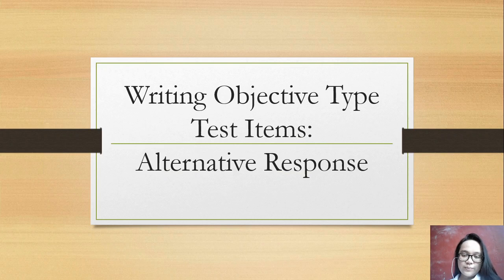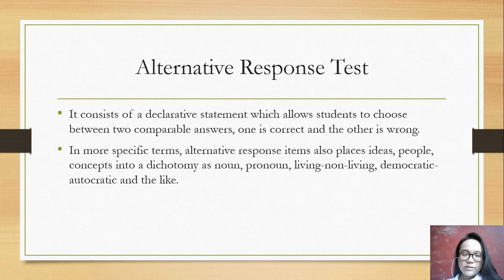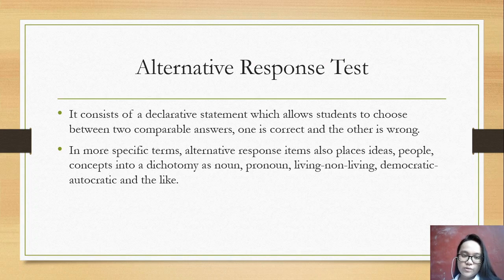Alternative response test consists of a declarative statement which allows students to choose between two comparable answers, one is correct and the other one is wrong. In more specific terms, alternative response items also place ideas, people, concepts into a dichotomy as noun, pronoun, believing, non-believing, democratic, autocratic, and the like.